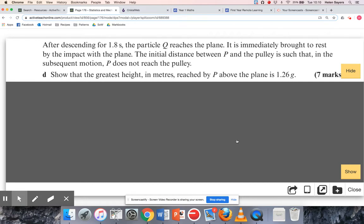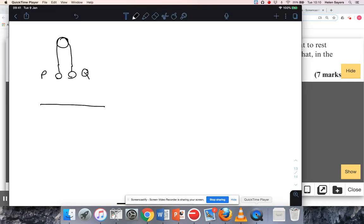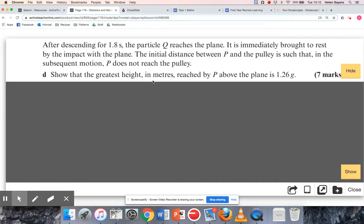So let's have a think about what's going to happen there. As Q is falling and then hits the ground, P is going to be moving upwards. The question says the distance between P and the pulley is enough that P doesn't hit the pulley. Once Q has hit the ground, the string will no longer be taught, so P is going to carry on moving upwards for a little bit, but if it's no longer being pulled up by the string, gravity is going to be the only force working on it. So it's going to slow down and eventually come to a stop, and that's what this question is about.